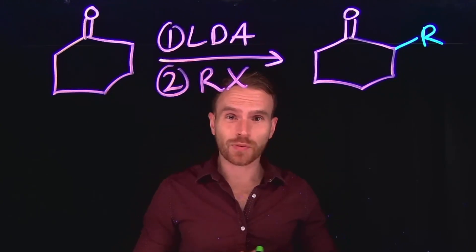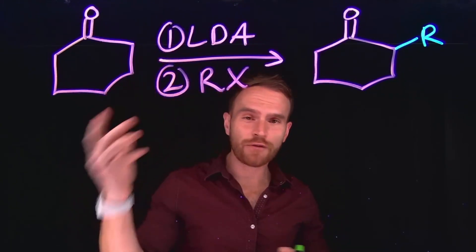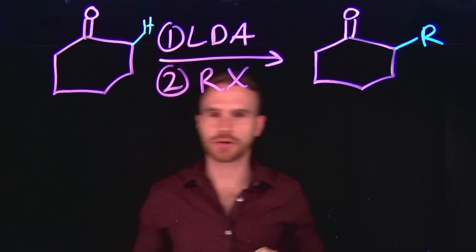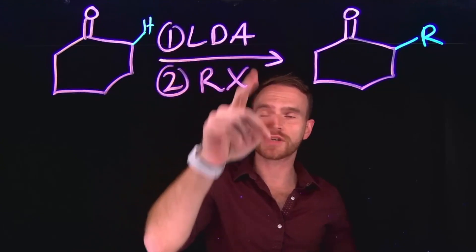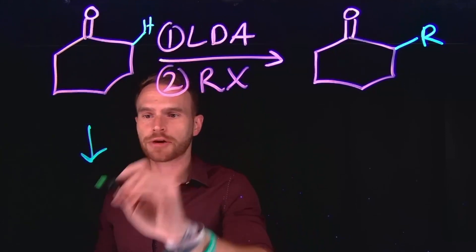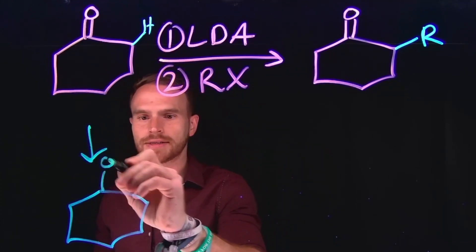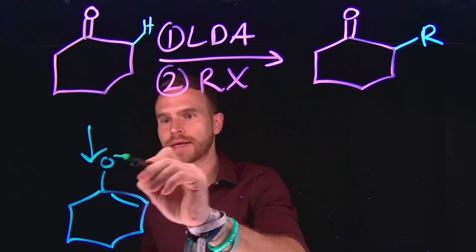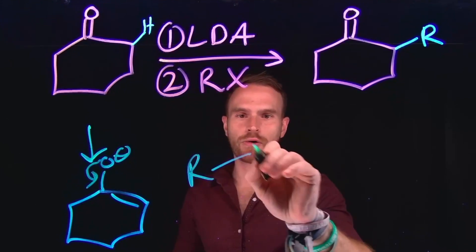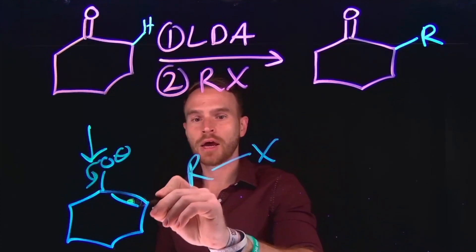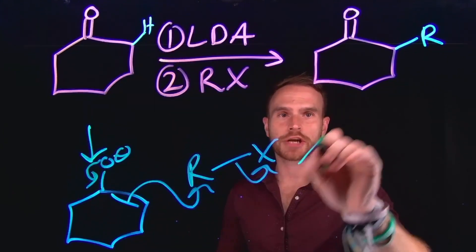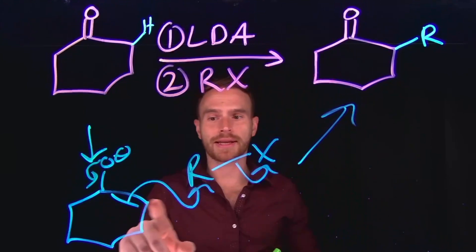Using the formation of enols and enolates, we can also alkylate the alpha positions of ketones. So remember that at the alpha carbon position, we can deprotonate to make our enolate species by using a strong base like lithium diisopropyl amide, or LDA. From here, we generate the enolate intermediate, which can then attack by bringing down those pi electrons from this alkene position to something like an alkyl halide. At an alkyl halide, we could do a nucleophilic substitution if we had a good leaving group as the halide, and we could generate this product by alkylating at that alpha position.